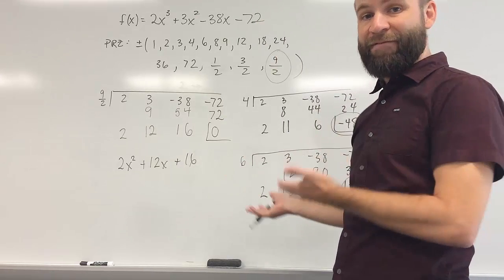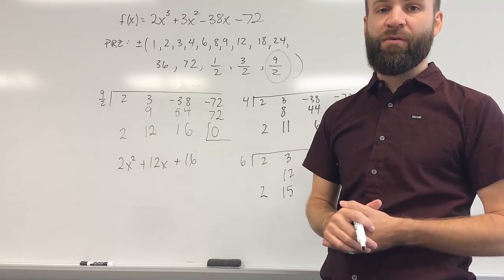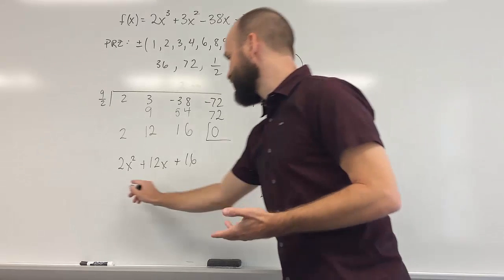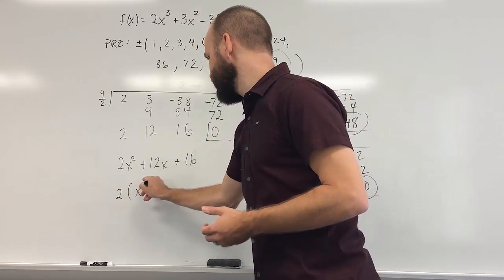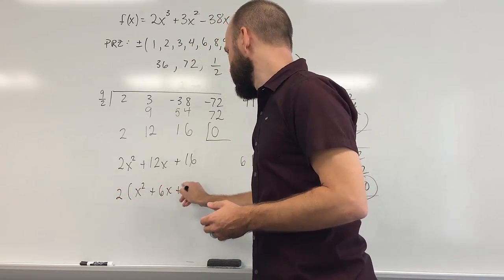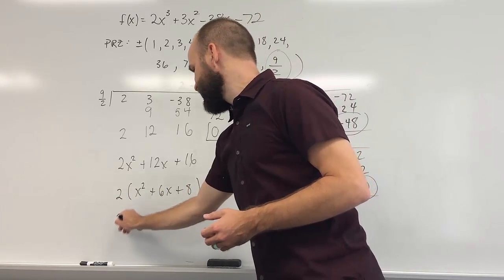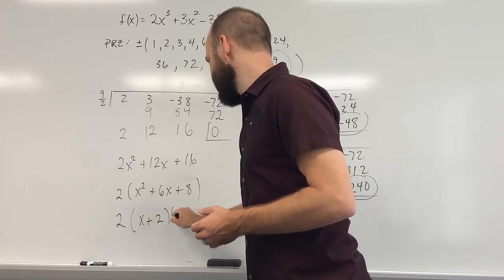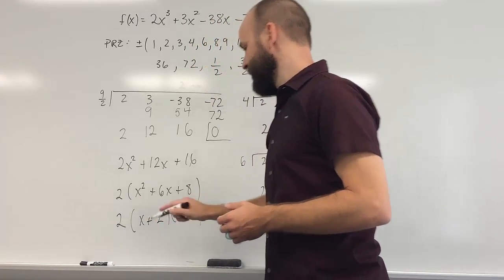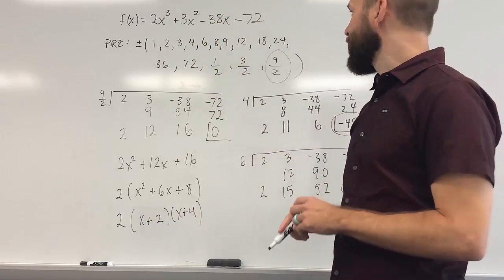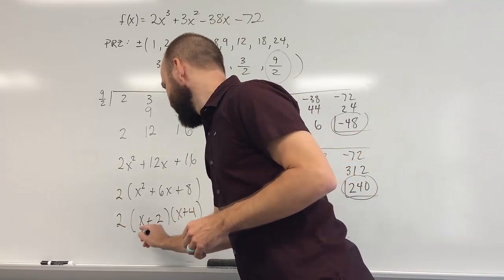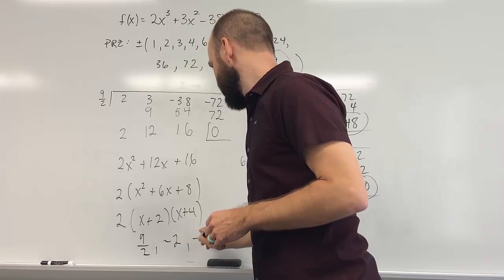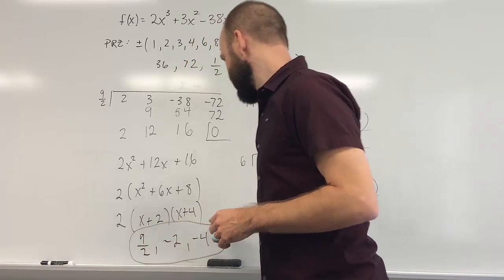If we can't factor this, we can always use the quadratic formula. But this one is factorable — factor out a 2, and x² + 6x + 8 factors as (x + 2)(x + 4). So the zeros for this function are 9/2, −2, and −4.